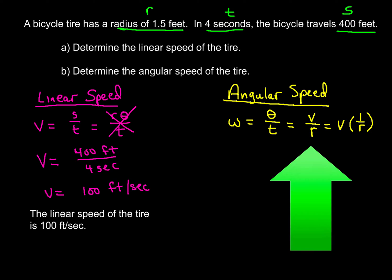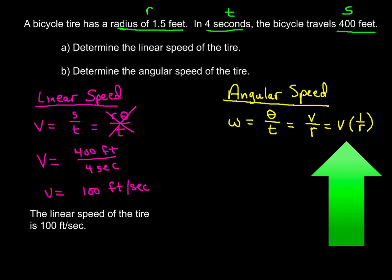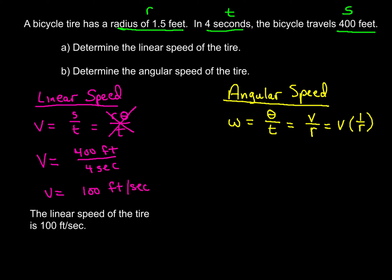Another version of the formula is v over r. So we already found our velocity, our linear speed. So we're going to go ahead and use this formula, v over r, because we have both of those variables. Now I'm going to rewrite v over r as v times the quantity one over r like this, and you'll see why in a moment. Now those of you guys taking chemistry will really understand this, because I know in chemistry you do this thing called dimensional analysis.